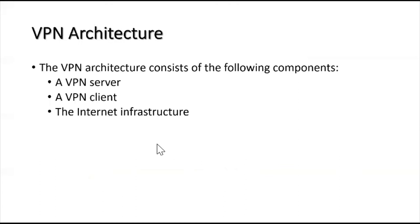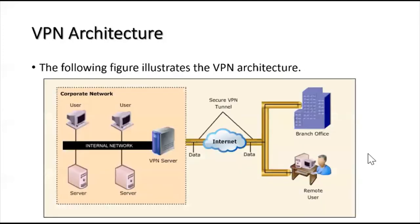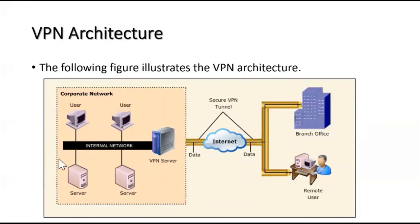Let us look at the VPN architecture. VPN architecture consists of three components: the VPN server, VPN client, and internet infrastructure. The VPN client can be a branch office, remote user, mobile user, or business partner. The VPN client connects through the VPN server, which authenticates the VPN client and then allows them to access the network resources, such as a file server.